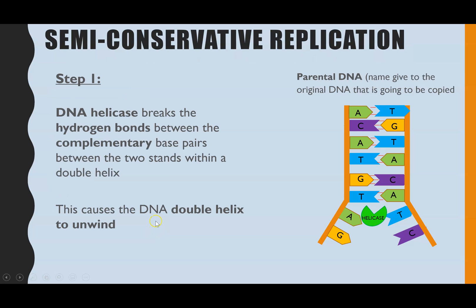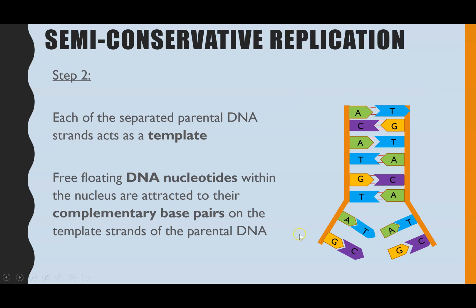Step one: the parental DNA is the name given to the original DNA at the very beginning. The first enzyme, DNA helicase, is going to break all of the hydrogen bonds between the complementary bases facing opposite each other on the two strands of the parental DNA. Breaking those bonds causes the double helix to unwind and the two strands to separate, which we can start to see occurring here at the bottom of the diagram.